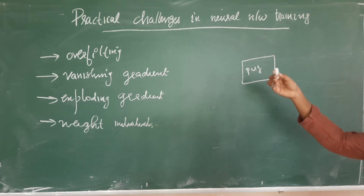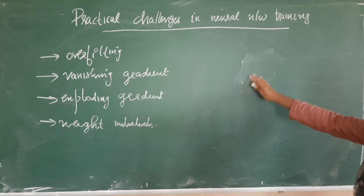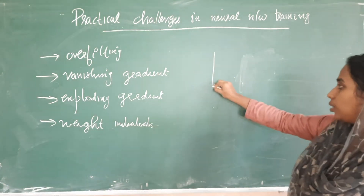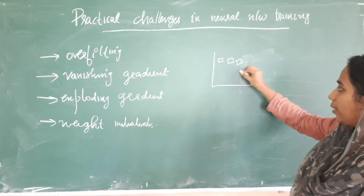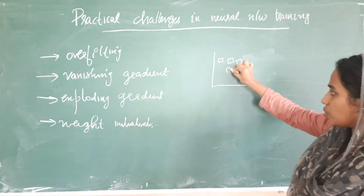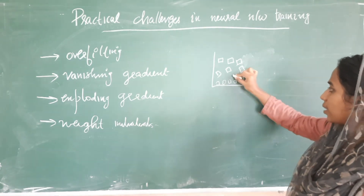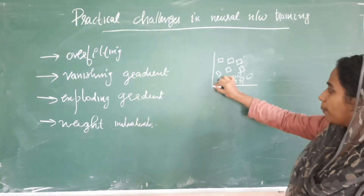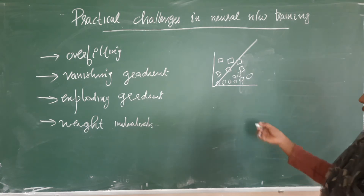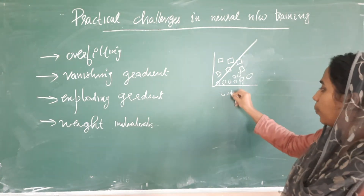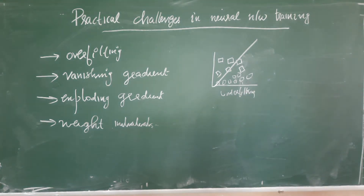Overfitting happens when your system fails to generalize things. Underfitting is when your system performs very badly during training as well. If your data points are arranged a certain way and the line of best fit does not properly classify the data points, we call this underfitting.